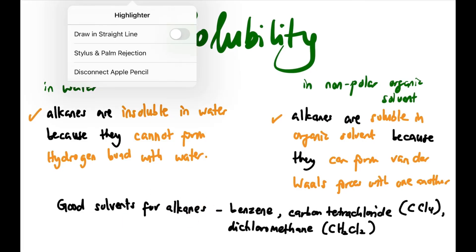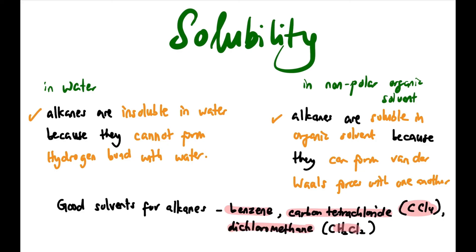For your information, these are some of the good solvents for alkanes: CS2, benzene, CCl4 (carbon tetrachloride), and dichloromethane (CH2Cl2). These are some of the good solvents for alkanes.